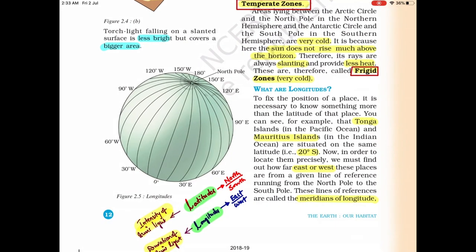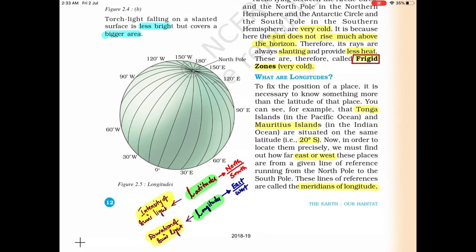Coming to longitude: latitudes are each parallel to one another, but longitudes are not parallel — they start from the north pole and end at the south pole. All latitudes give the intensity of the Sun's light, but longitudes give the duration of sunlight. Latitudes help us determine north and south, while longitudes help us determine east and west.